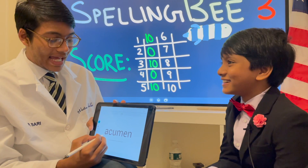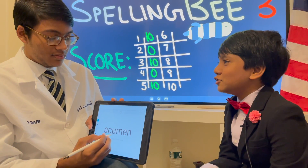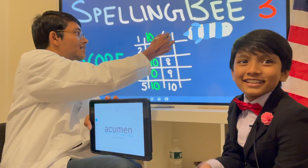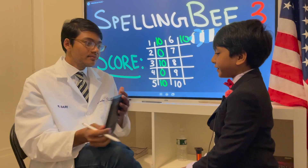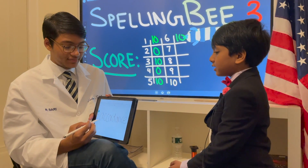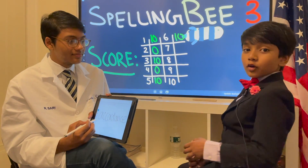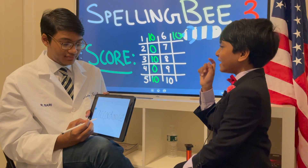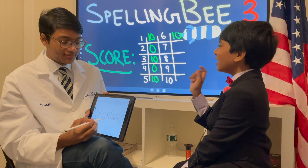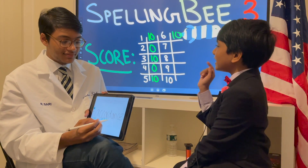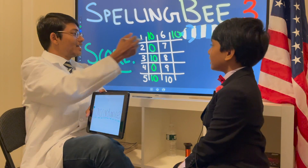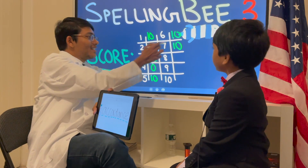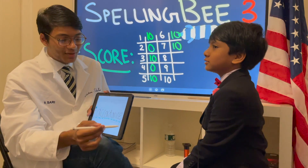Next word: acumen. A-C-U-M-E-N? That's right. Accordance. Oh, that's even easier. A-C-C-O-R-D-A-N-C-E. That's right. It's going to be suspect if he didn't learn that in round 3.